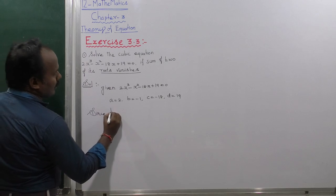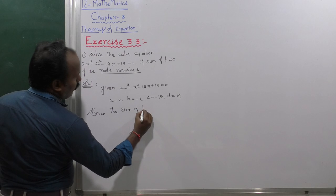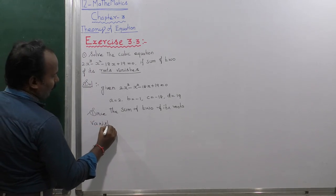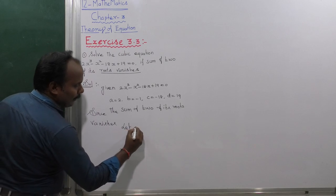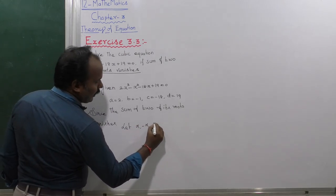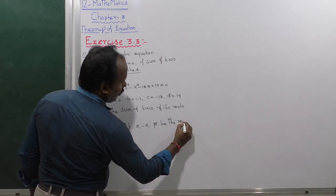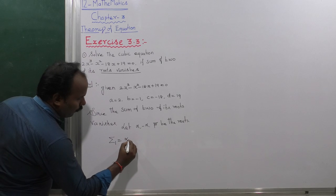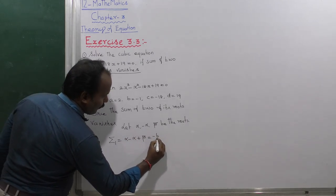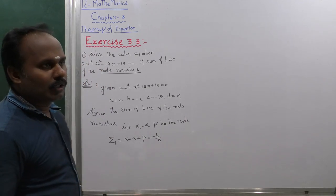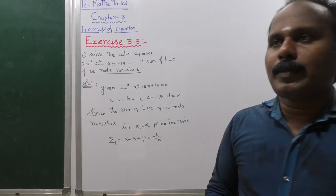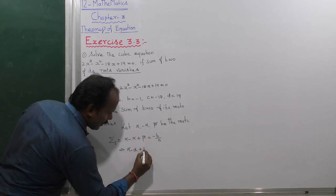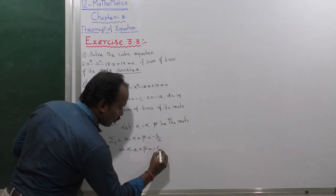Since the sum of two of its roots vanishes, let us consider the roots to be alpha, minus alpha, and beta. Now find summation 1: alpha + (-alpha) + beta = -b/a. That is Vieta's formula — summation 1 equals alpha + beta + gamma = -b/a. So alpha minus alpha plus beta equals -1/2.